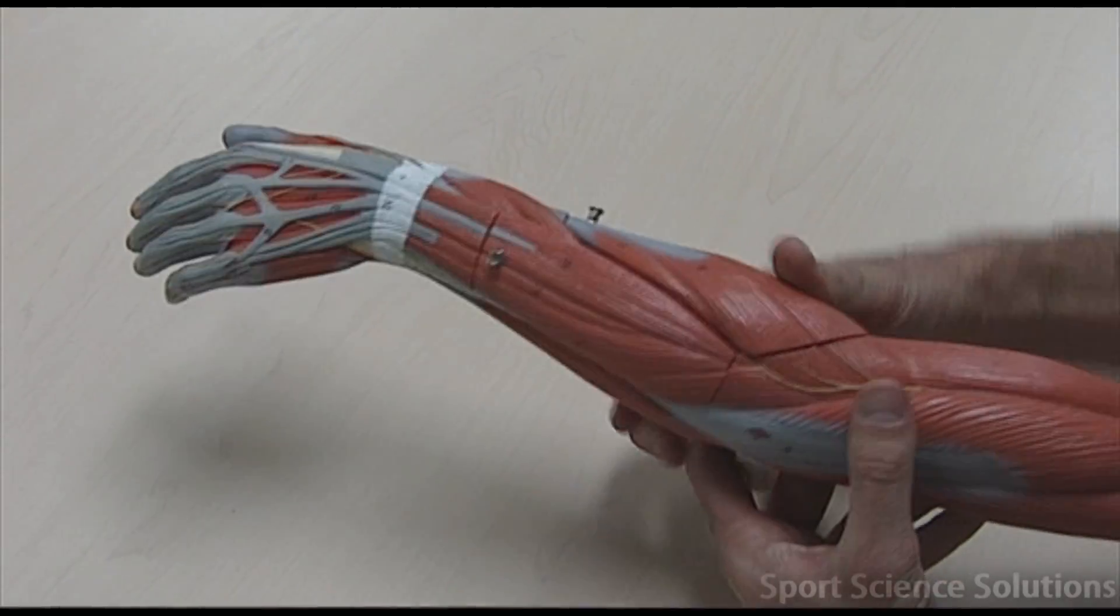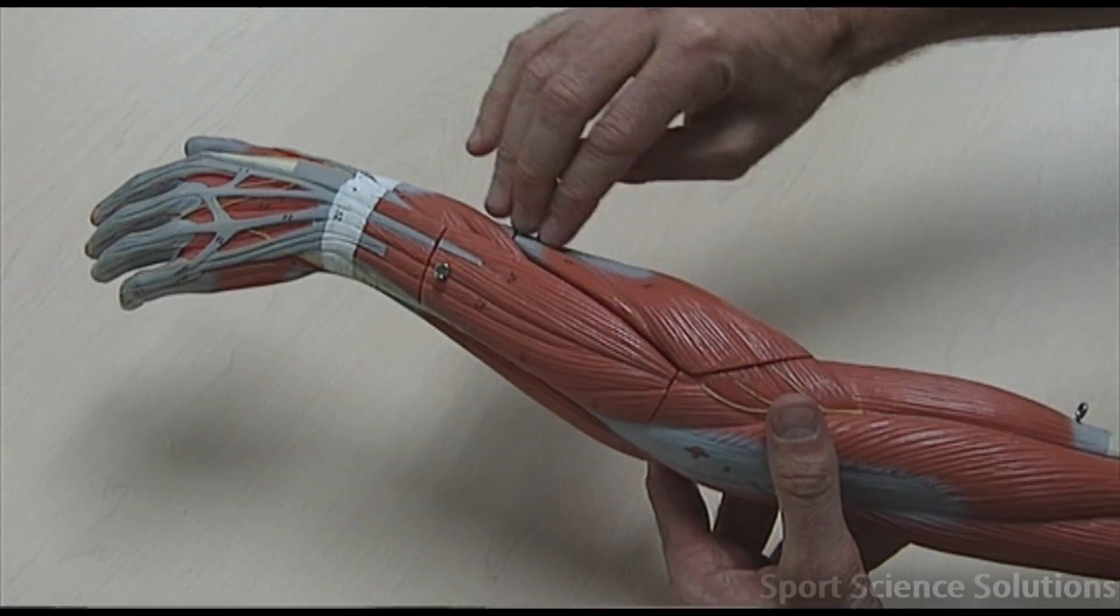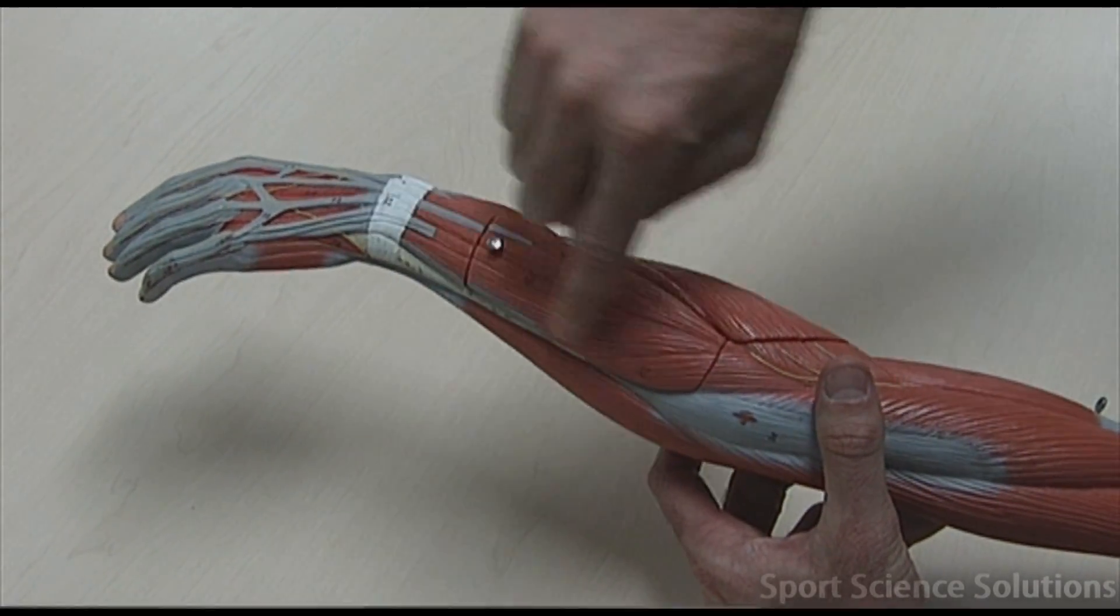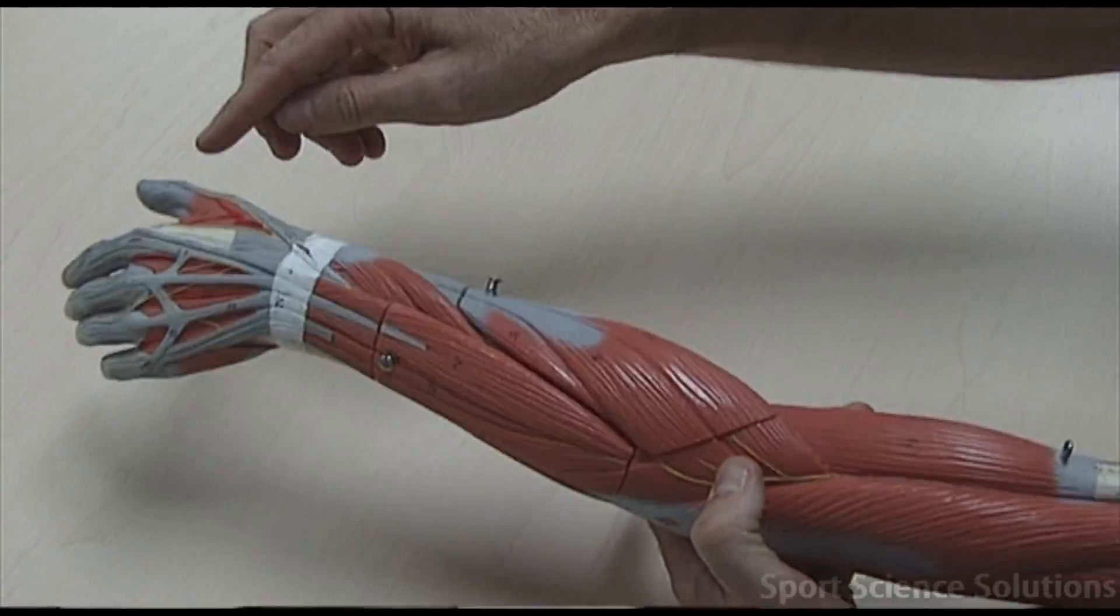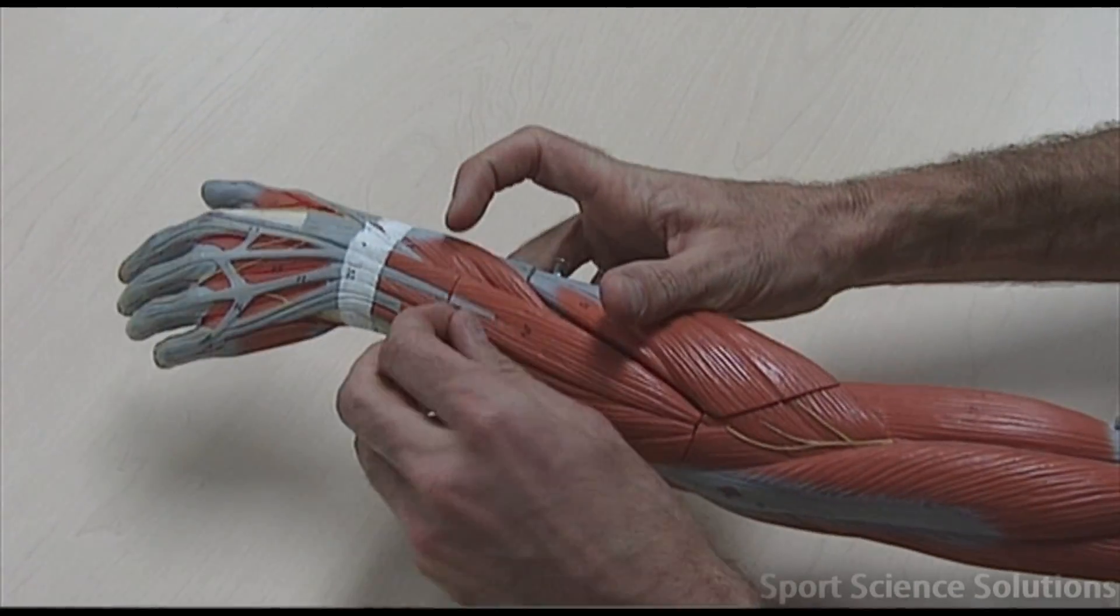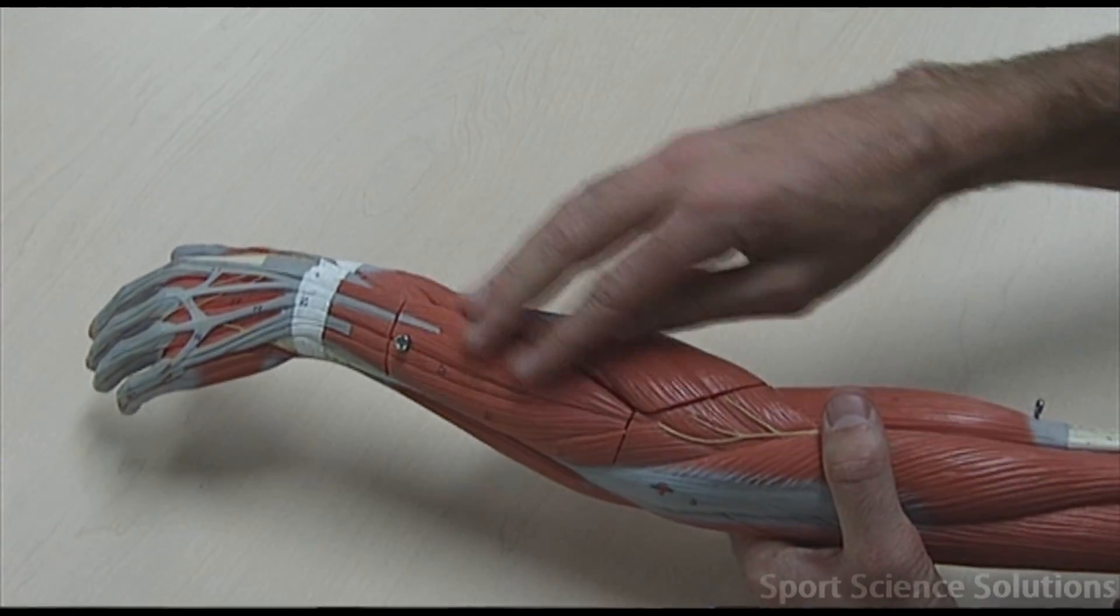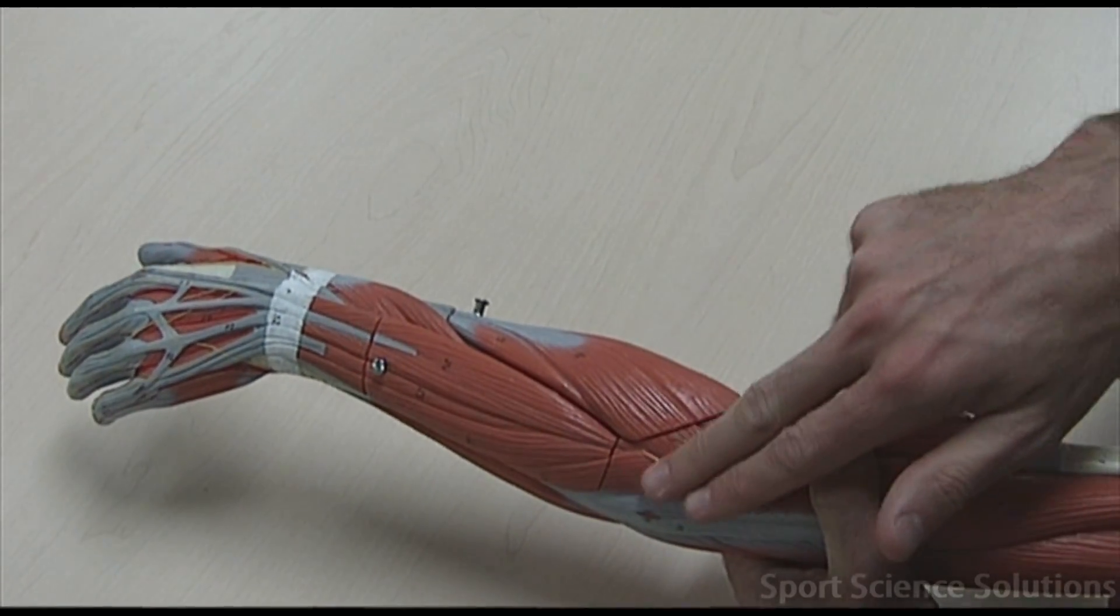Similarly, on the extensor side of the arm, we've got the extensor carpi radialis, extensor carpi ulnaris, extensor digitorum, and the extensor pollicis longus, deep to the thumb. All of these muscles have an origin at the lateral epicondyle of humerus.